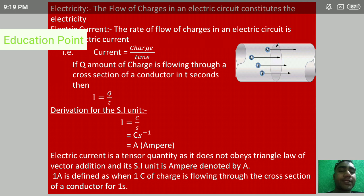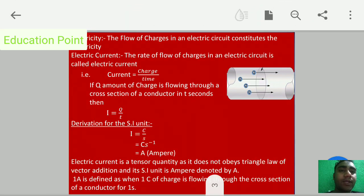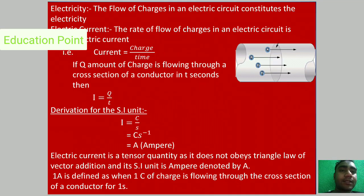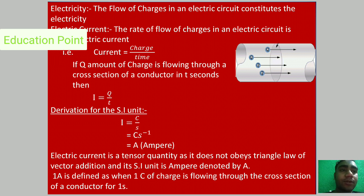The flow of charges in an electric circuit constitutes electricity. The rate of flow of charges in an electric circuit is called the electric current. Therefore, we can write that current I is equal to charge Q upon time T.